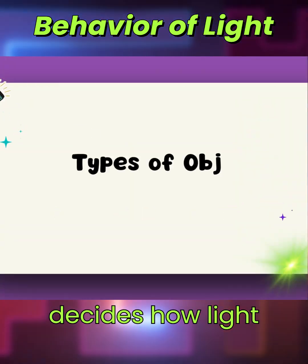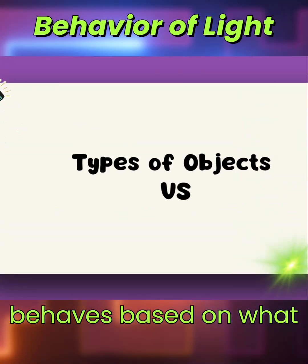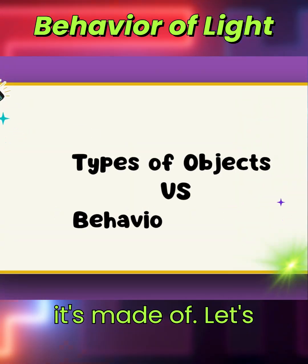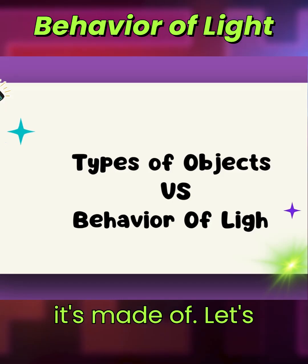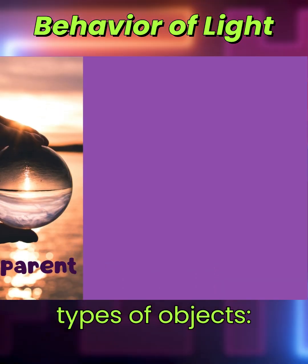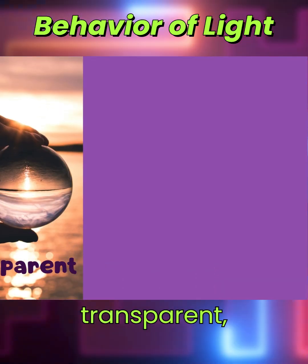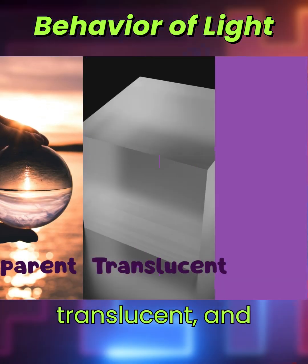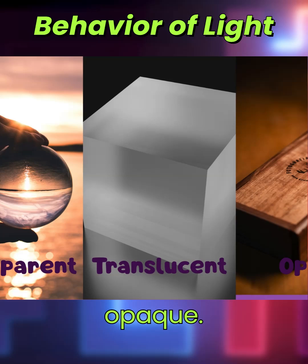Each object decides how light behaves based on what it's made of. Let's meet the three main types of objects: transparent, translucent, and opaque.